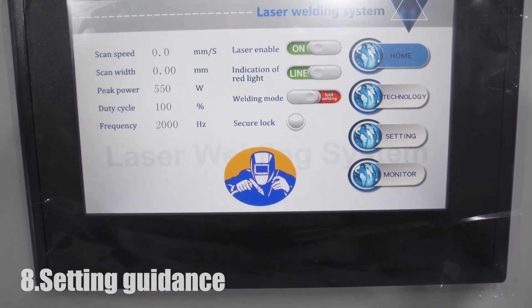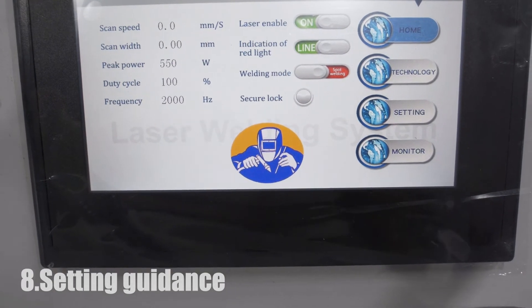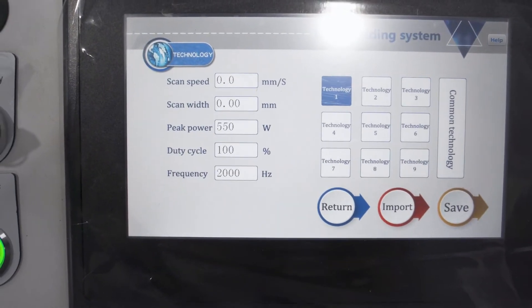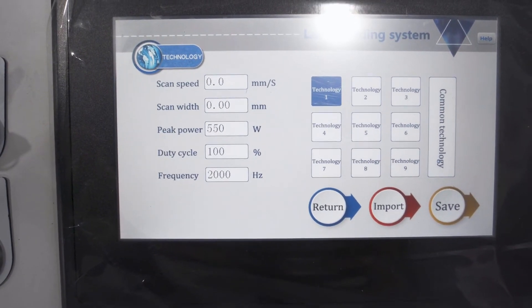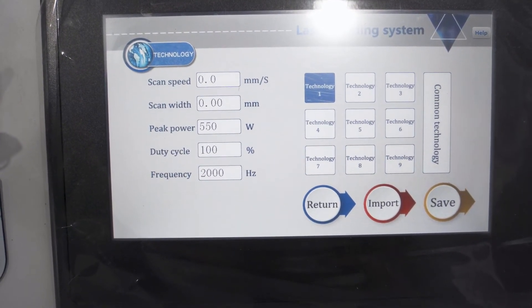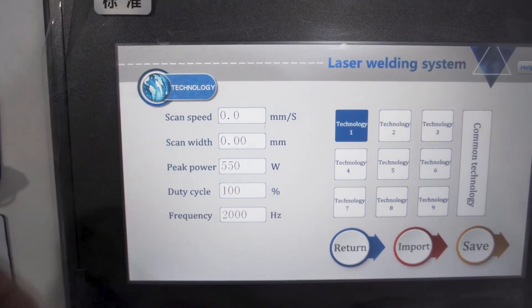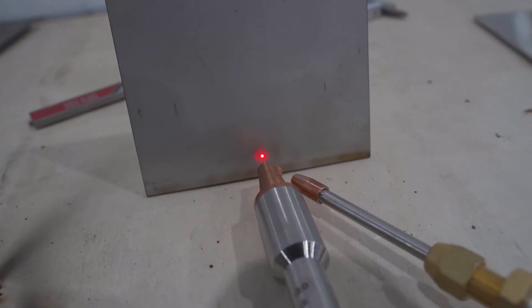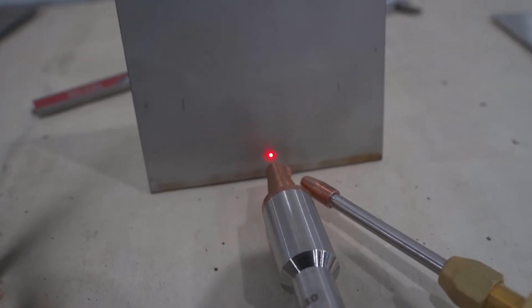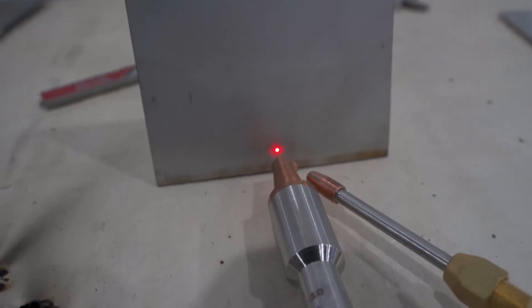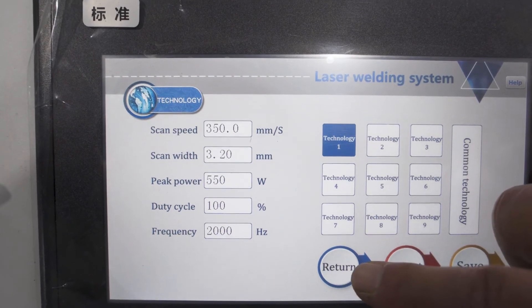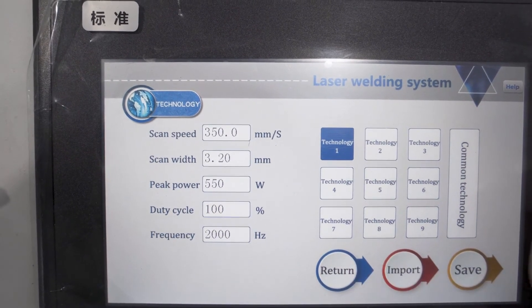This is the laser welding system and you can change the parameters on the setting. Generally you only need to change the scan speed, scan width and peak power. Now the scan width is zero. You can see when you set zero on the scan width, it's a point. Generally you set 350 scan speed and 3.2mm width.